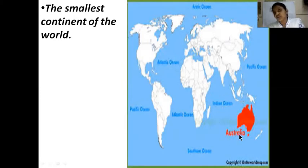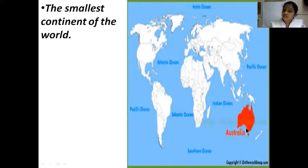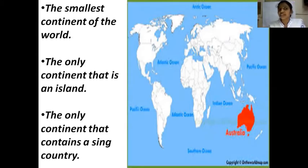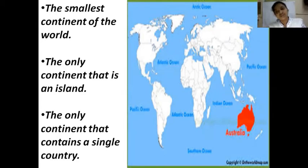Australia has the Pacific Ocean, the Indian Ocean, and the Antarctic Ocean surrounding it. So it is the smallest continent of the world, the only continent that is an island, and the only continent that contains a single country — that is Australia.